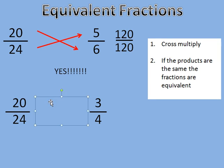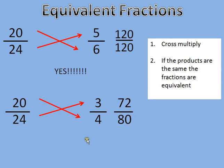Let's look down here. We can do the same thing. Multiply the numerator by the denominator, the denominator by the numerator. 20 times 4 is 80, but 24 times 3 is 72. They're not the same, so those fractions are not equivalent.